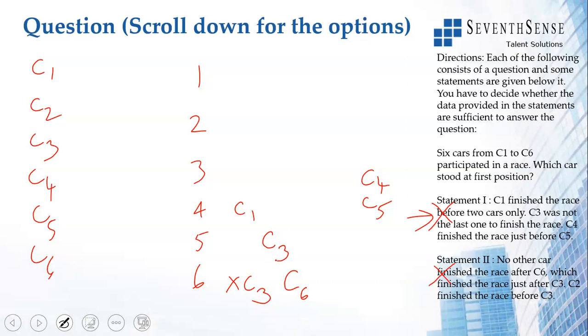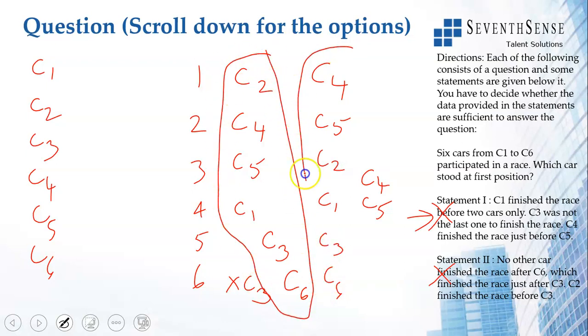C2 finished the race before C3. I can have C2, C4, C5 or C4, C5, C2. I have this arrangement or this arrangement.